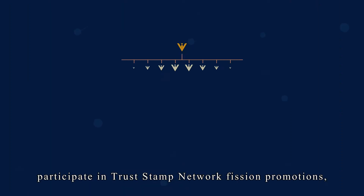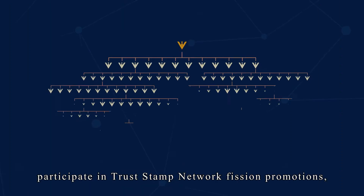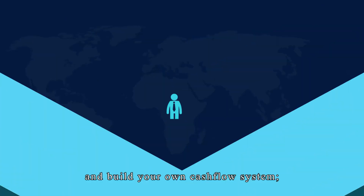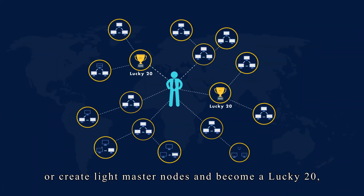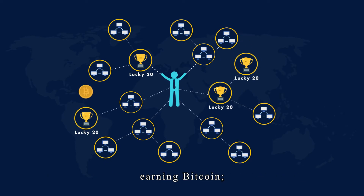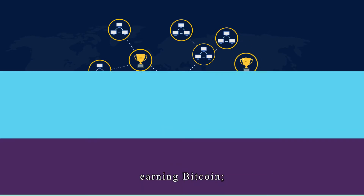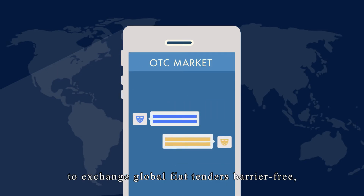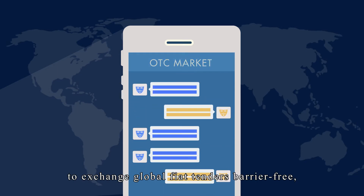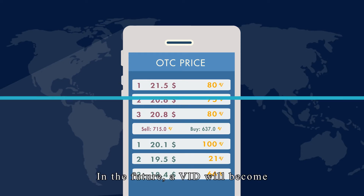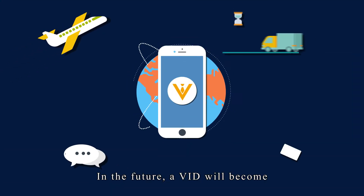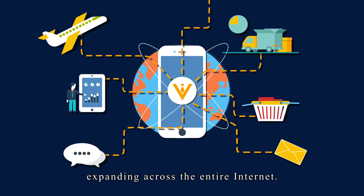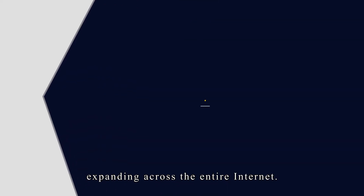You can participate in Trust Step Network vision promotions and build your cash flow system, create light master nodes and become a Lucky 20 earning Bitcoin, or even create or join an OTC group to exchange global fiat currencies barrier-free. In the future, a VID will become the internet's anonymous virtual ID, expanding across the entire internet.